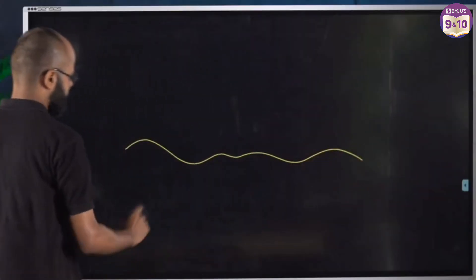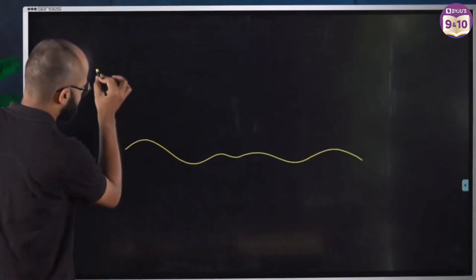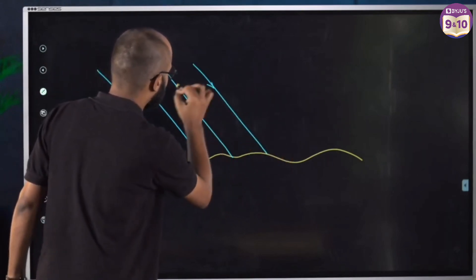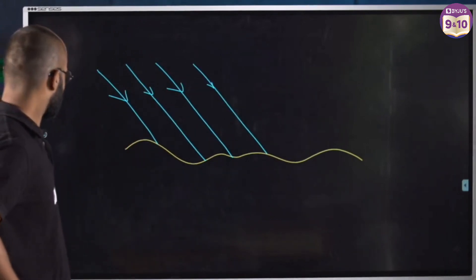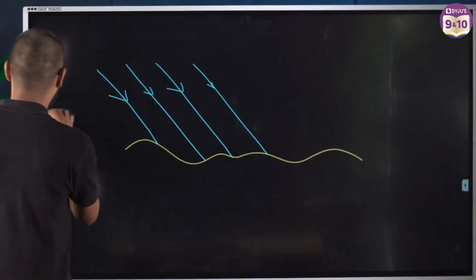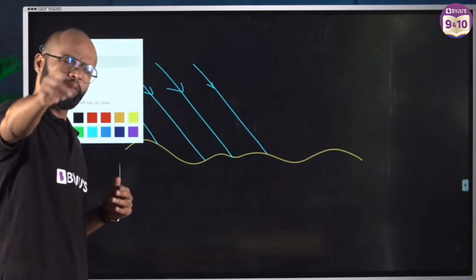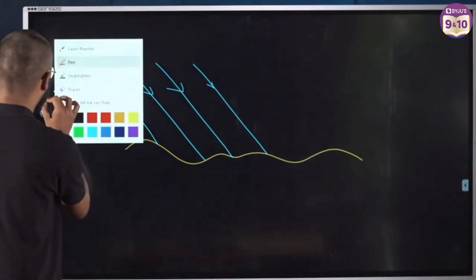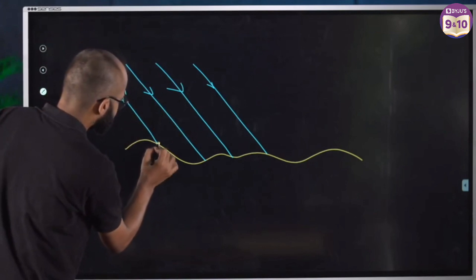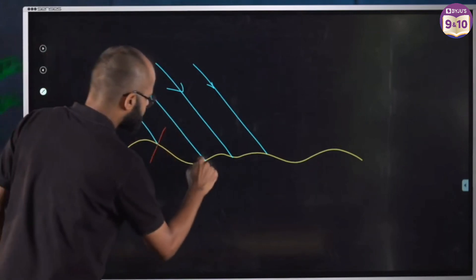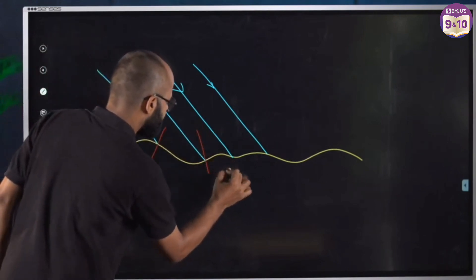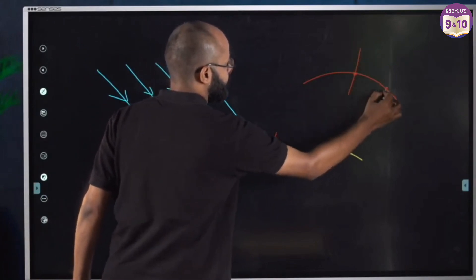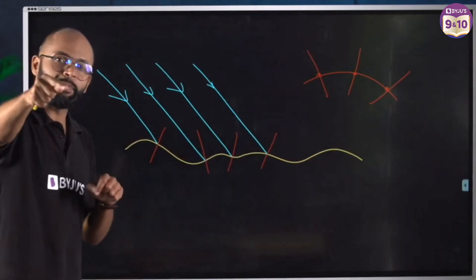Let me draw this. This is an irregular surface. Let me bring in the incident rays — this is ray one, second ray, third ray, and fourth ray. All these incident rays are parallel to each other. Now, the laws of reflection say that i equals r — the angle of incidence should equal the angle of reflection, measured from the normal. The normal is always perpendicular to the surface. At each point on this irregular surface, the normal is oriented differently — like this here, like this here, and like this here.